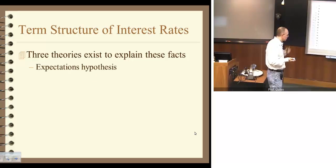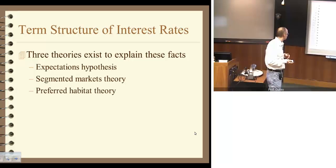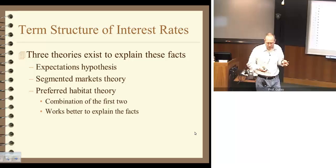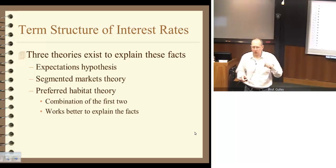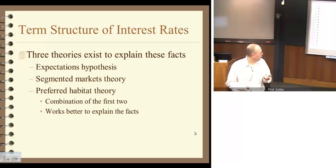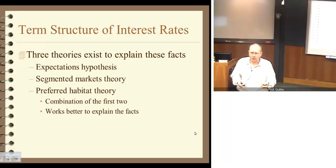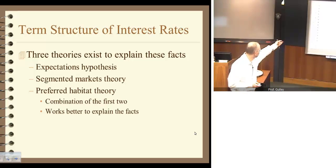Coincidentally, there are three theories to explain these three facts: the expectations hypothesis, the segmented markets hypothesis, and the liquidity premium theory — also called the preferred habitat theory. It turns out the first two are really special cases of the third one. So let's take a look at the preferred habitat theory to see how that works.